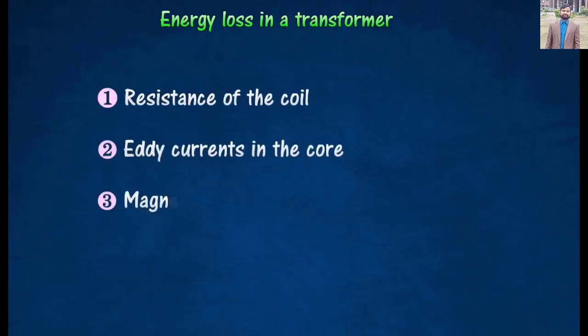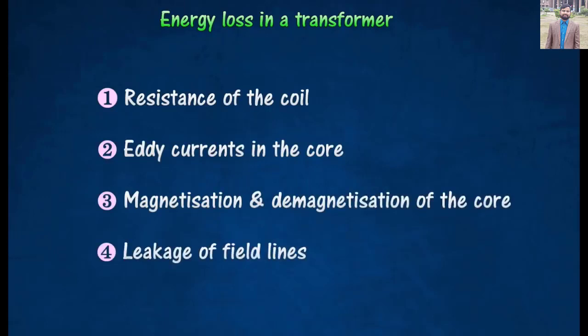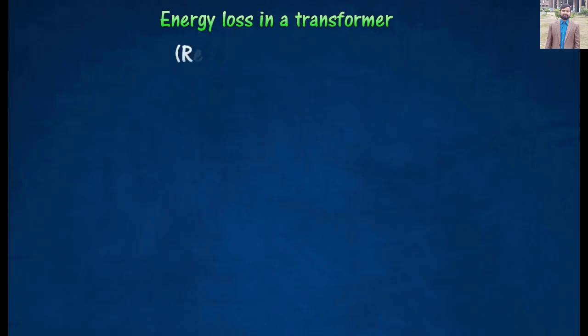core losses account for the majority of losses, but as the load increases, winding losses quickly dominate and account for 50-90% of transformer losses at full load.